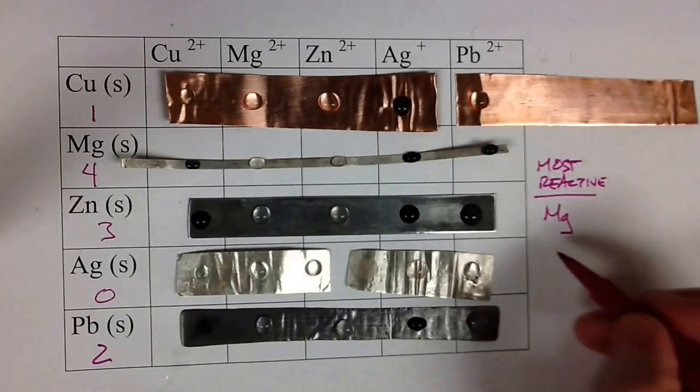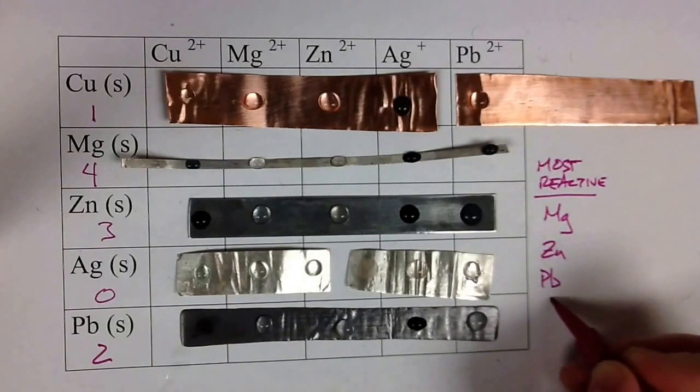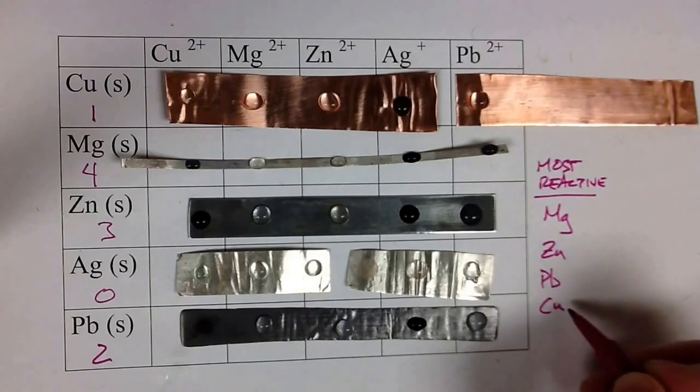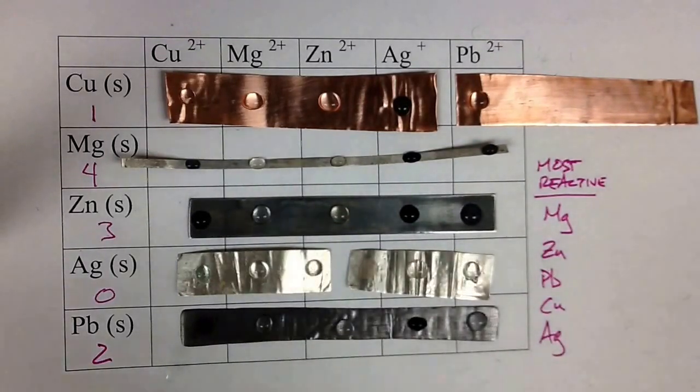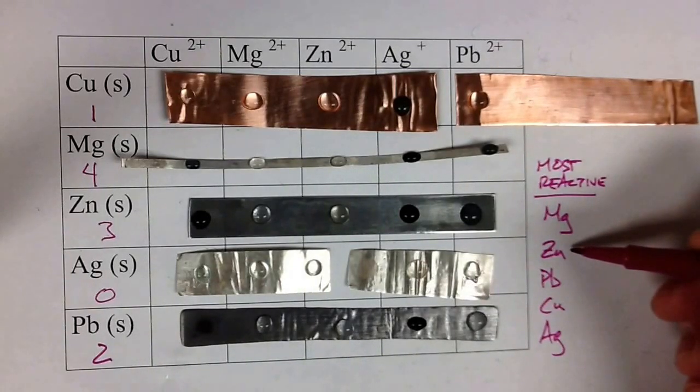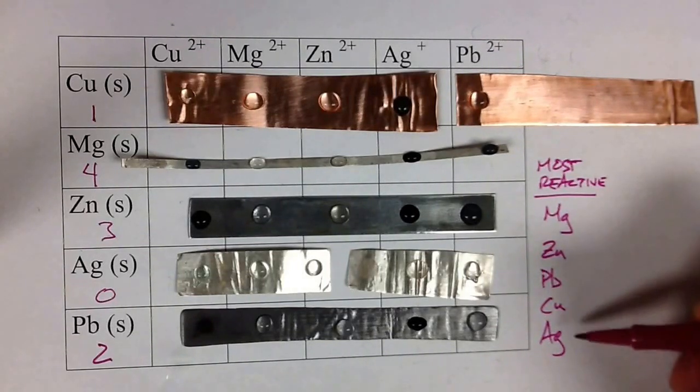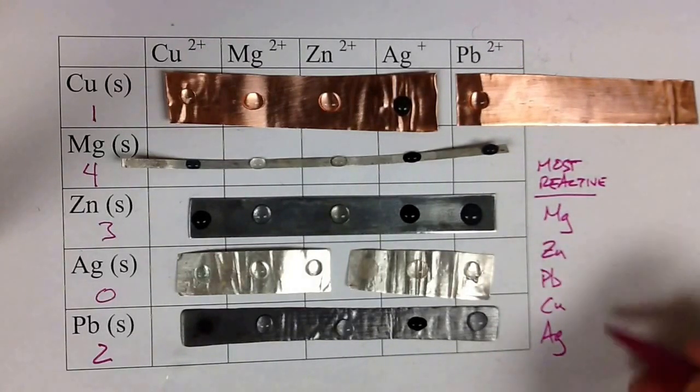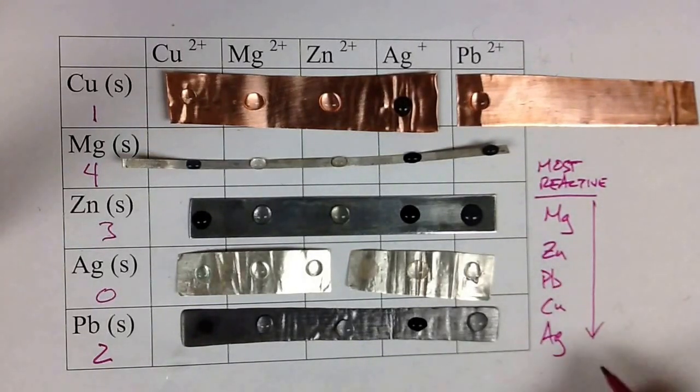Then we had zinc. Then our next one was lead. Copper. And one. And then silver. All right. So magnesium had four reactions. Zinc had three. Lead had two. Copper had one. And silver zero. So this is your most reactive down to your least reactive.